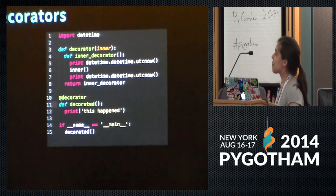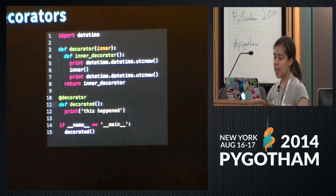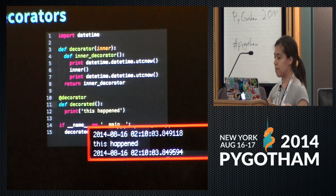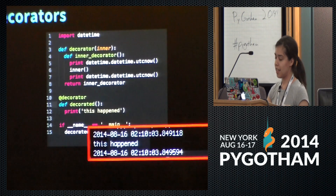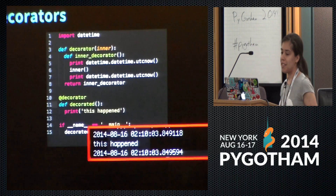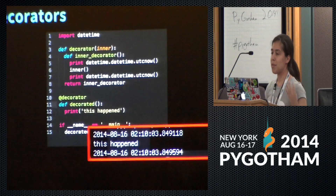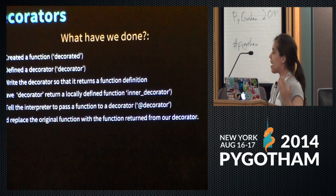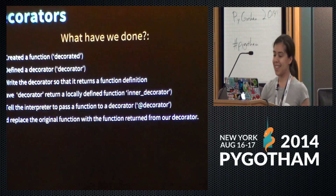What if I just print something more interesting instead of just 'this happened'? Now I'm doing the same thing, except I'm printing the current time before execution and the time after execution. So if I run this, I get a rough idea of how long it took my function to execute. The cool thing is I can apply this decorator to any function and get the same kind of runtime, so I can see which of my functions took the longest to execute. I just wrote a mini profiler using one tiny decorator.